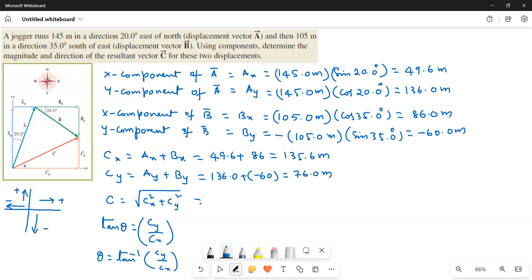And then C is equal to square root of 135.6 square plus 76 square. And that gives a value of 155 meters.